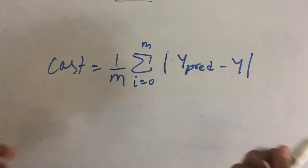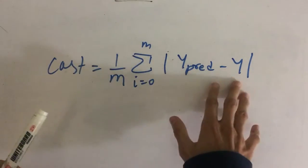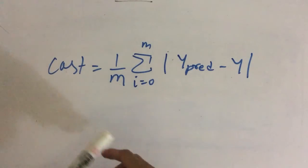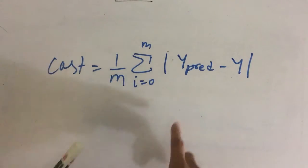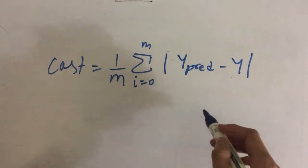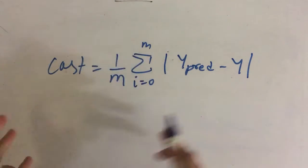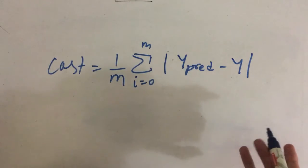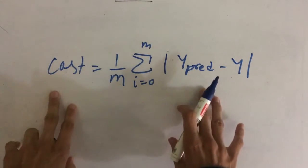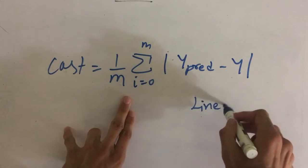But there's a problem with this cost function. If our predictions were in continuous form or could have taken any values, then this cost function would have worked very well. For example, the output predictions for linear regressions are continuous values. They can take any number as their output prediction. So this can be represented as the formula for the cost function for linear regression.